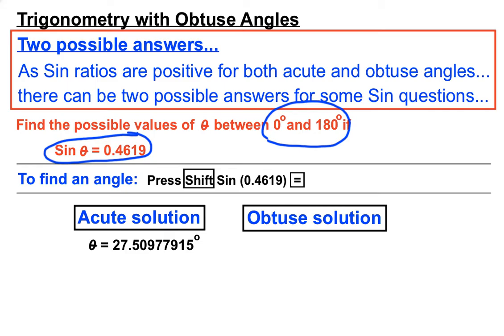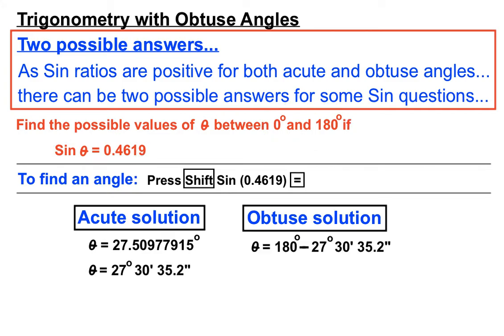So we found 27 degrees roughly there. Now how do we, from earlier in this video, do you remember how we go from acute angles to the equivalent obtuse angles? We take our acute angle away from 180 degrees. And we get a final answer of 152 degrees, 29 minutes, 24.8 seconds. So to go from this point to this point, we'd have to press the degrees, minutes, and seconds button again.